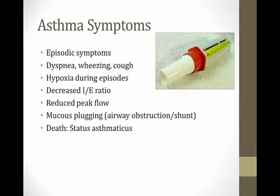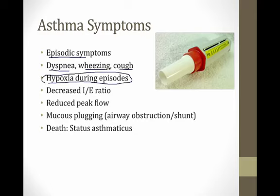Symptoms of asthma tend to be episodic — patients are relatively well for a while and then develop lung symptoms, and with treatment they can go back to normal. The symptoms are shortness of breath, wheezing, and cough, and attacks can get severe enough that patients become hypoxic. One finding you should know is a decreased I-to-E ratio. Normally the inspiratory-to-expiratory time ratio is about 1:2 or 1:3. In patients with asthma, the expiratory phase gets prolonged because it takes longer to get air past the obstruction, so this ratio can fall to 1:4 or even 1:5.